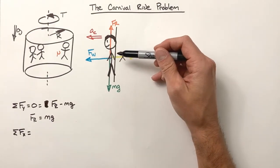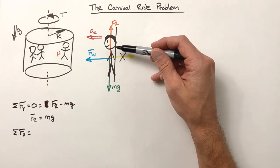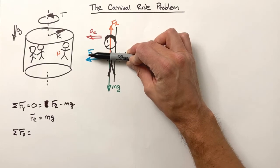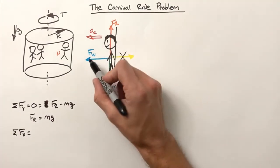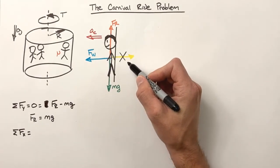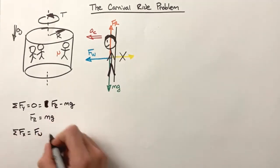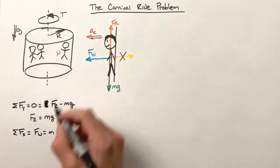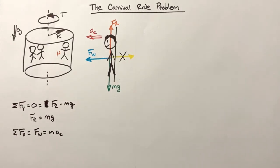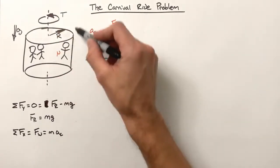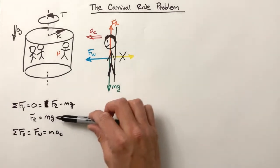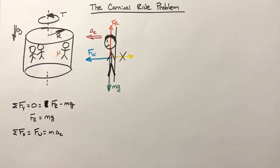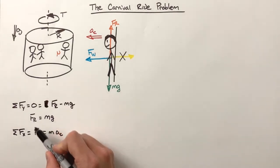Now for the horizontal axis — at first you might think the sum of forces must equal zero, but it does not. The person and wall must accelerate inward toward the center. So the sum of all forces in the x-axis is the force by the wall, which is unbalanced, causing the mass to accelerate at the centripetal acceleration a_c. We'll tie centripetal acceleration back to the given variables in a moment.